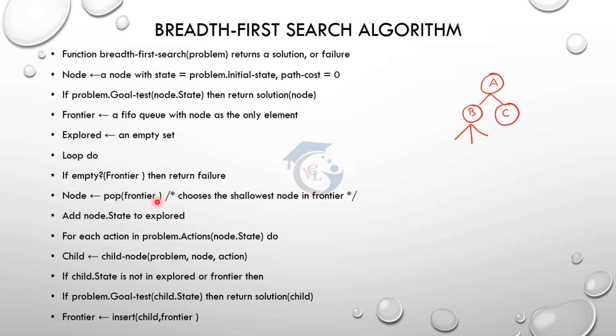We choose any node from the frontier to further expand. Now we have two frontier nodes; we choose B. We add node.state to the explored set. For each action in problem.actions applied to node.state, we choose the child node based on the action.